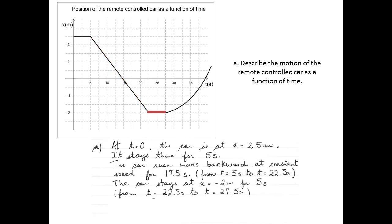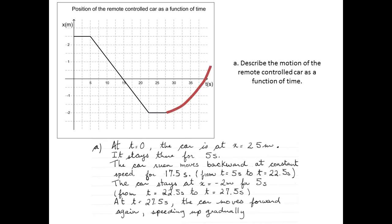From t equal to 22.5 seconds to t equal to 27.5 seconds, the car stays at x equal to minus 2 meters. At t equal to 27.5 seconds, the car moves forward again and speeds up gradually. You can tell this because the slope of the position-time graph is gradually getting steeper and steeper.